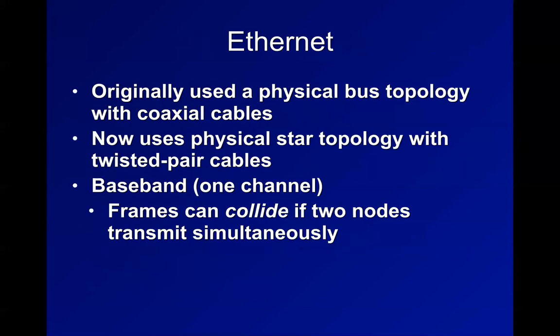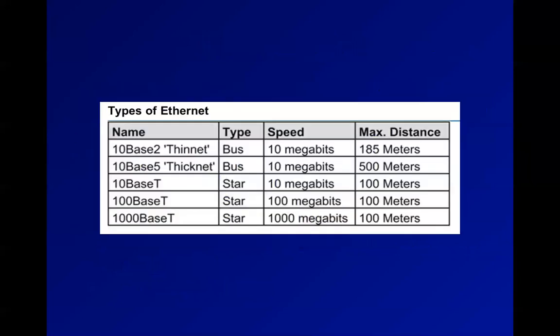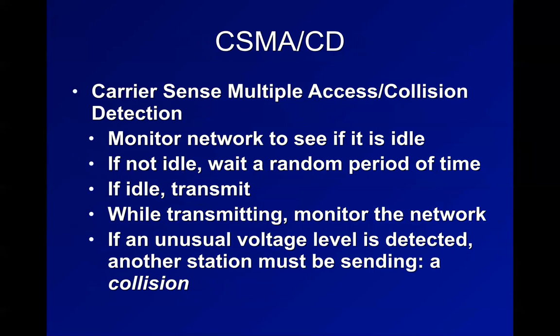Ethernet became the king of local area networks - one wire to each device and dumb switches that just look at the MAC address, the cheapest way to get the job done. They've moved from coaxial Ethernet with thinnet and thicknet to various generations of UTP Ethernet, and now mostly moving to wireless. CSMA/CD is intended to make hub Ethernet work by detecting collisions, sending a jamming signal, and resending packets. This is pretty much no longer important for switched Ethernet since there are almost no collisions.